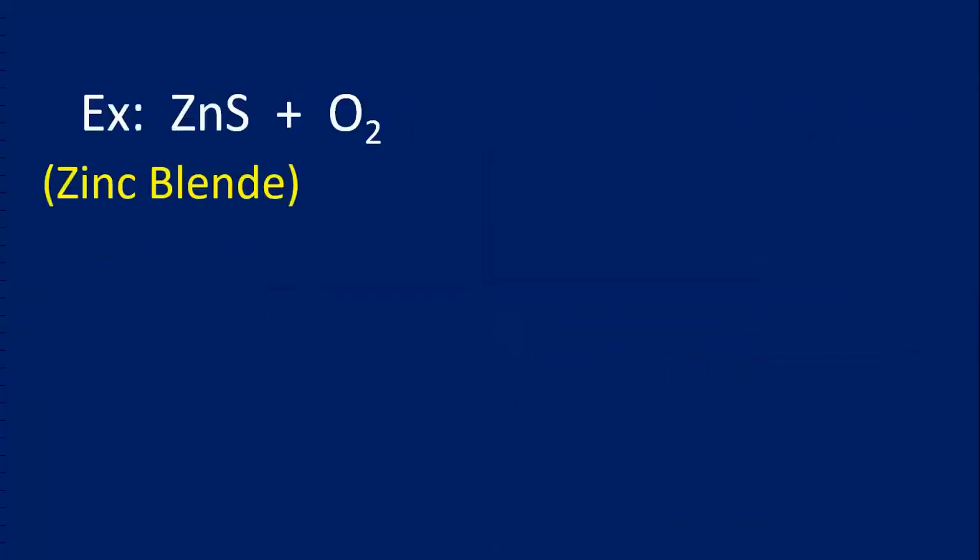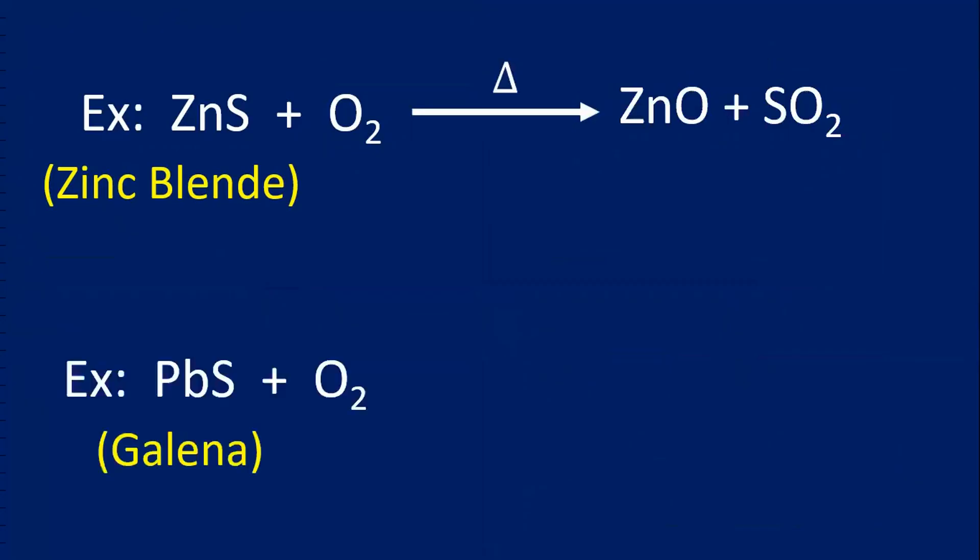Zinc blend, ZnS. Take excess oxygen. Then, if you heat it, what happens? These are the products. Galena. When this is roasted in the presence of oxygen, we get PbO, litharge. SO2 gas escapes out.